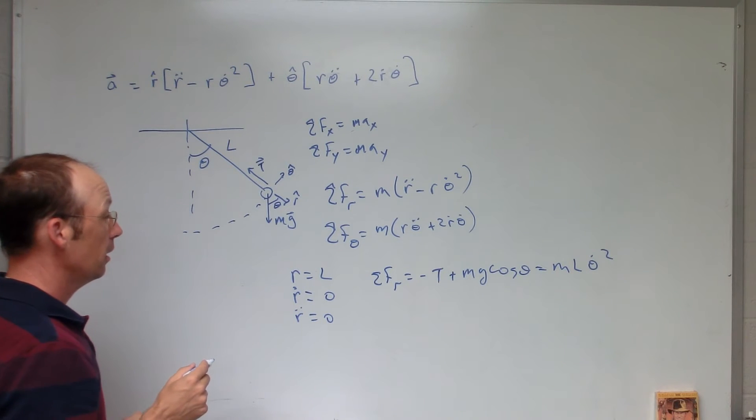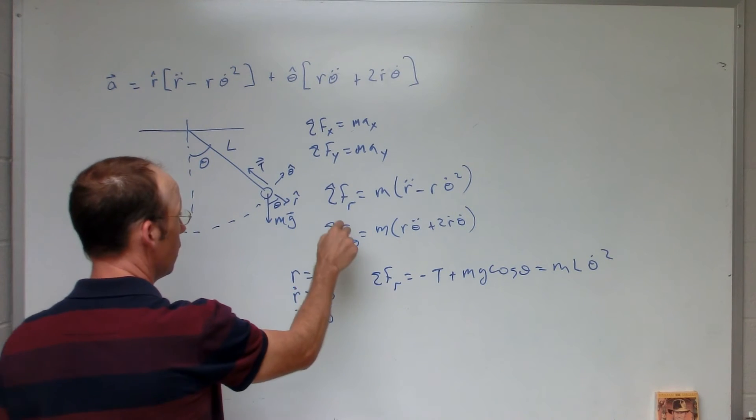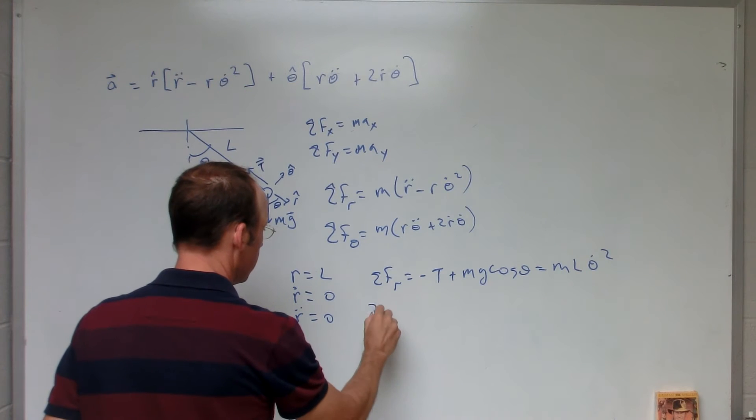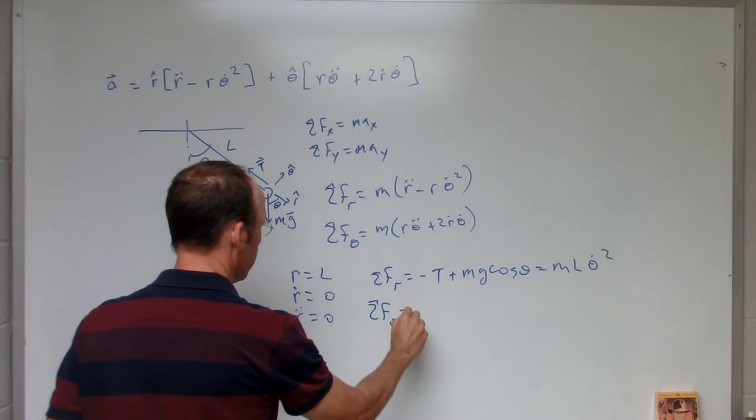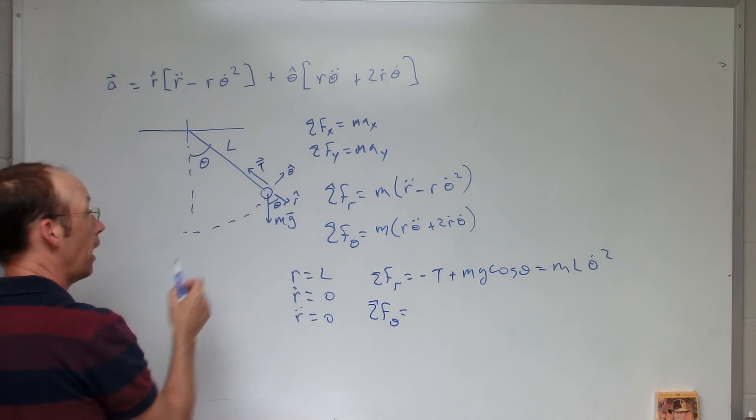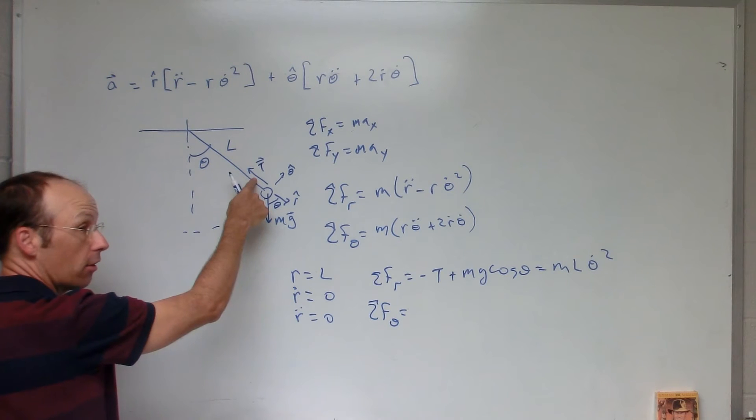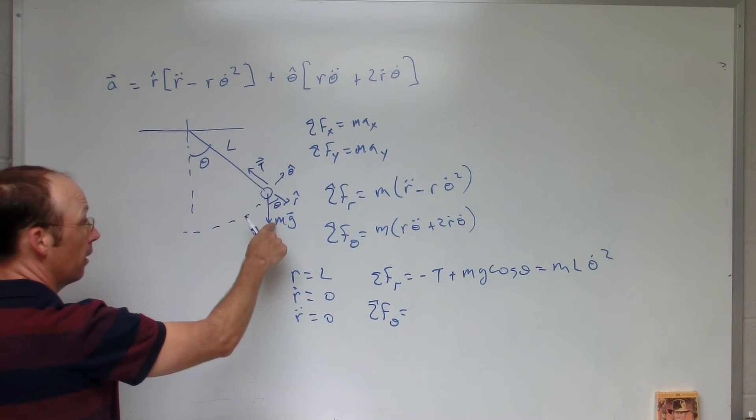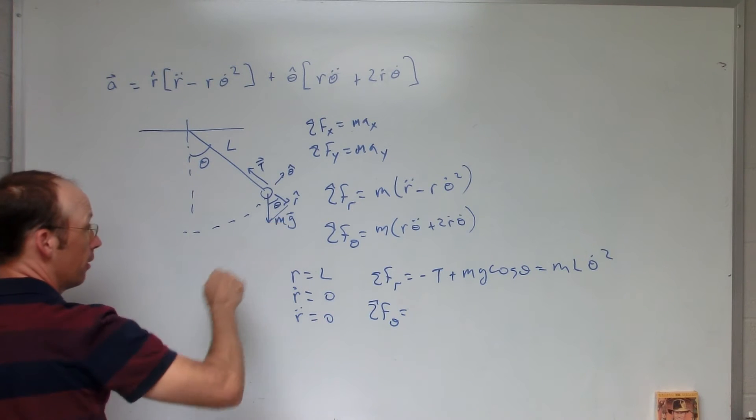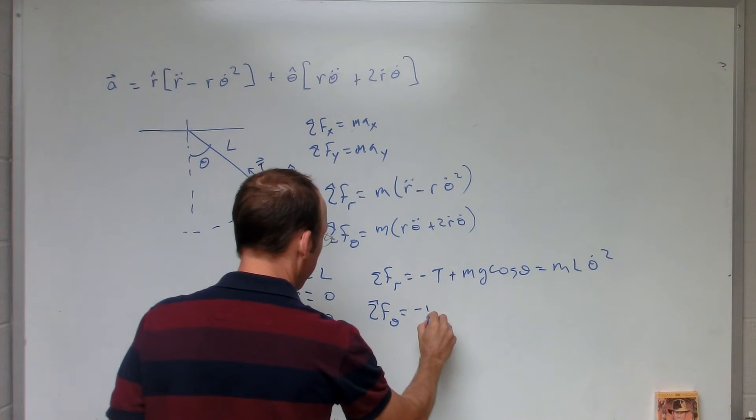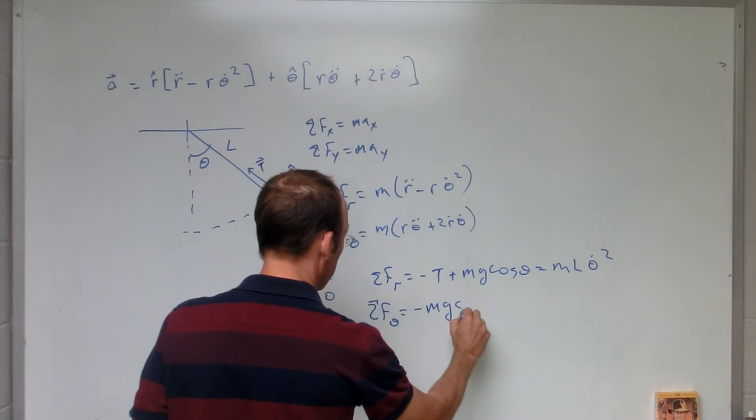Instead, let's do the theta direction. Sum of the forces in the theta direction is going to be, now I only have one force. I have gravity is partly in the theta direction. The tension doesn't act in the theta direction at all. It's perpendicular to that. So this is going to be the opposite side of this part. So it's going to be negative mg sine theta.